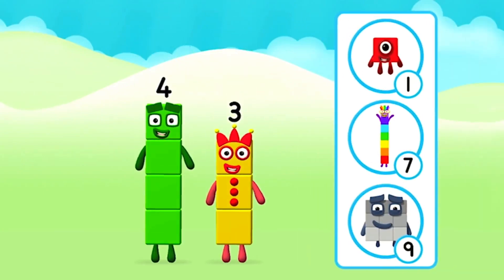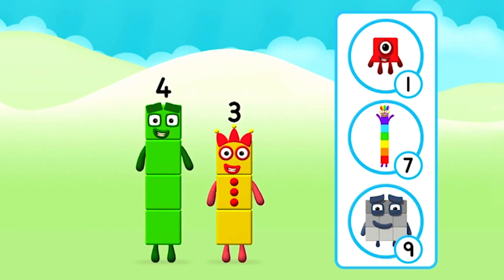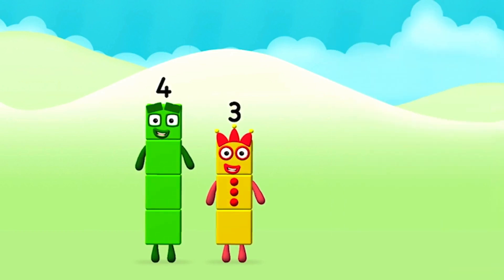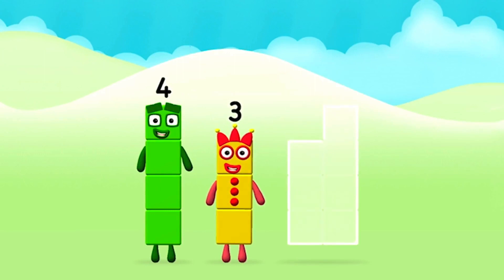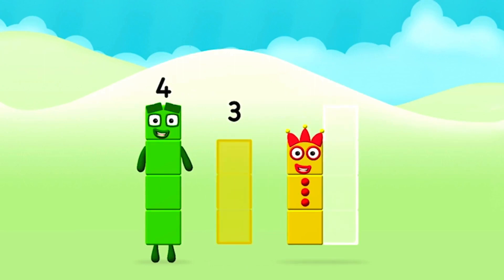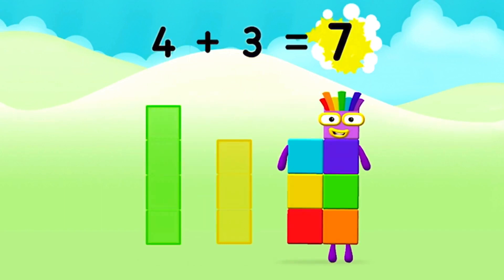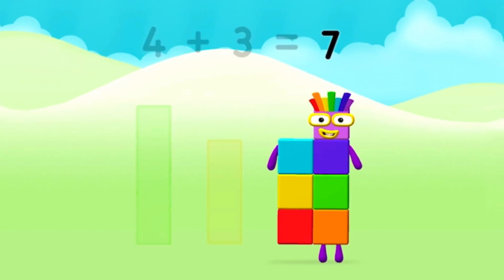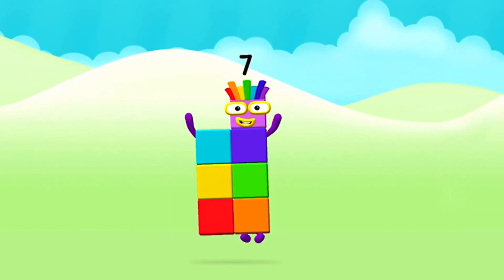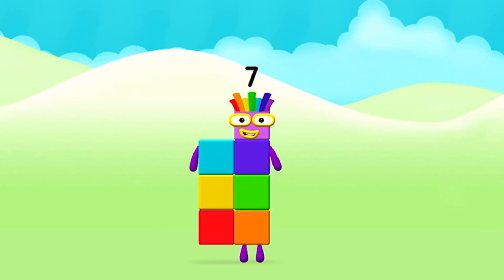Do you know which number block you'll make when you add these two number blocks together? That's the correct answer! Now add the number blocks together! 4 plus 3 equals 7! You made number block 7!